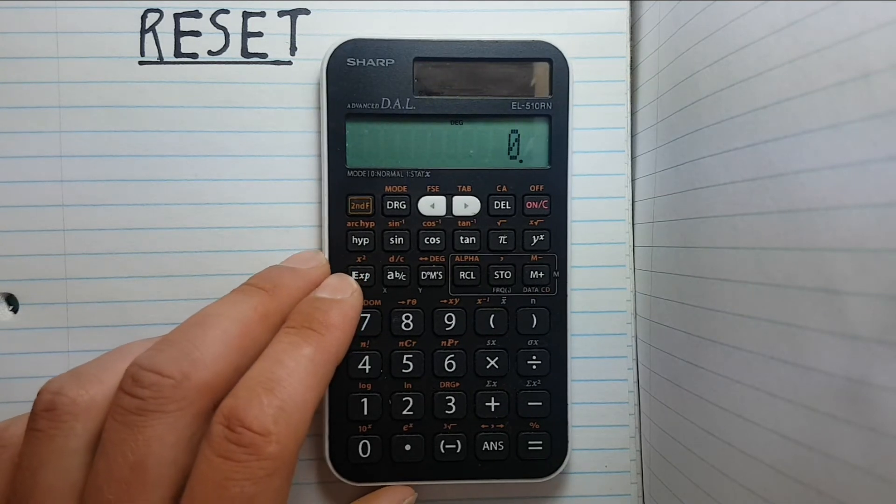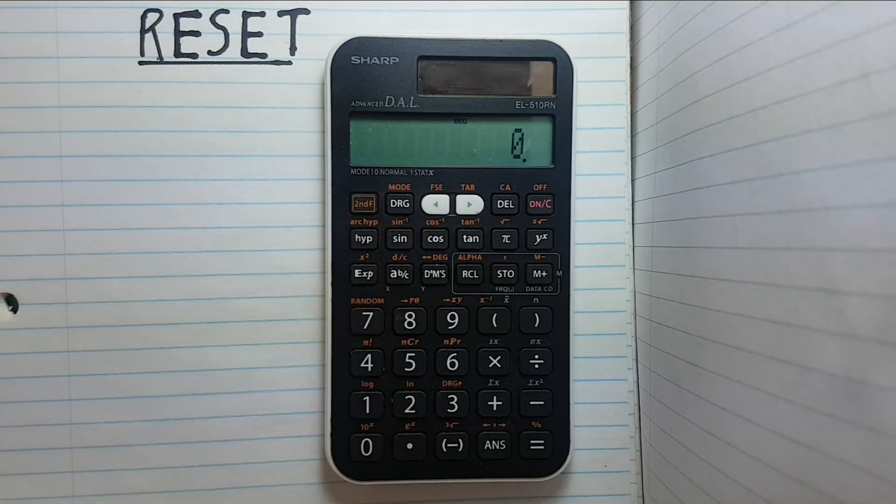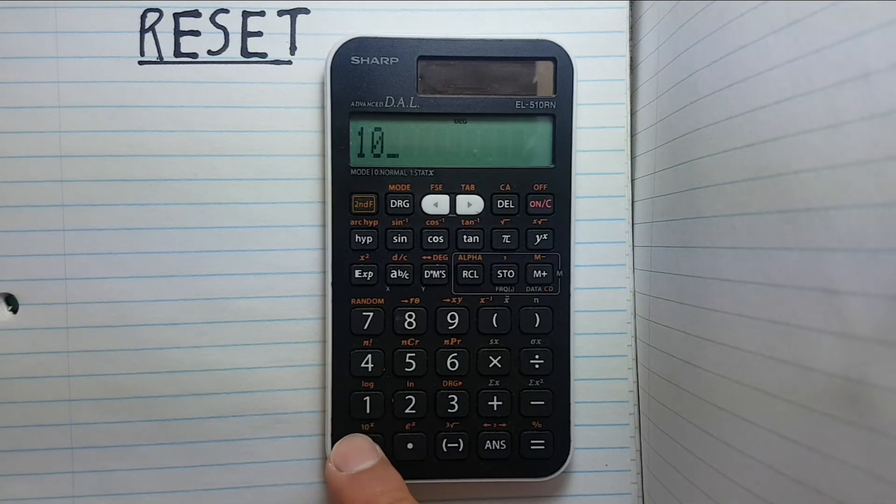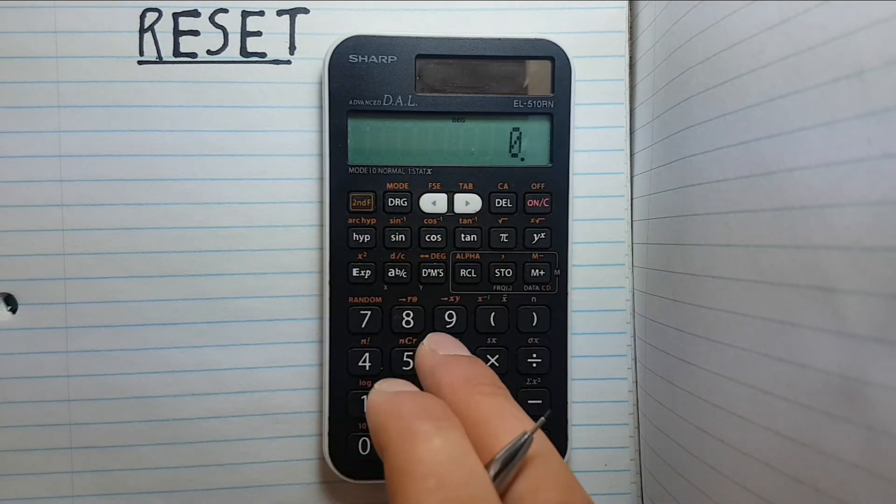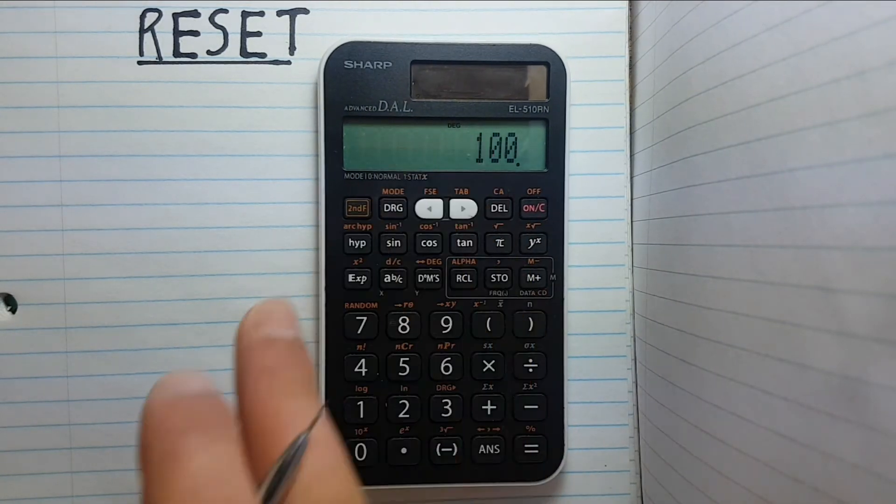We can confirm this if we want by saving a variable to one of the store slots. So let's store 100 to our X. There we go, we can recall it from X. See we have it stored.